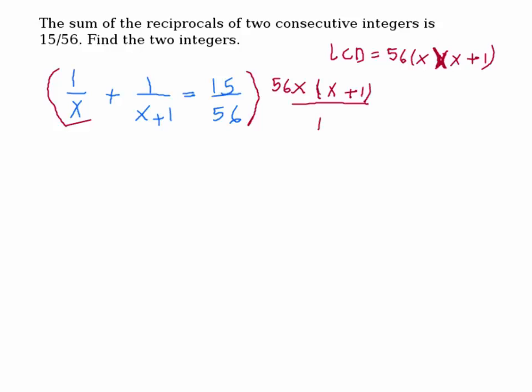If I distribute this, can somebody tell me what I get for the first term? We have 1 over x times the LCD — the x cancels. So we get 56 times (x plus 1). How about the second term? The (x plus 1) cancels, so we get 56x only for the second term.